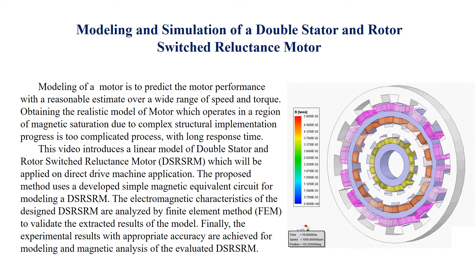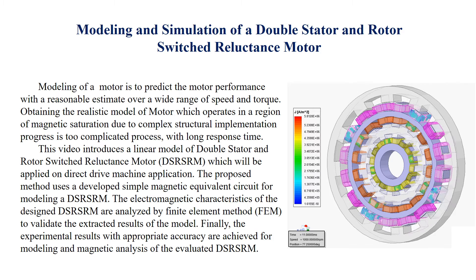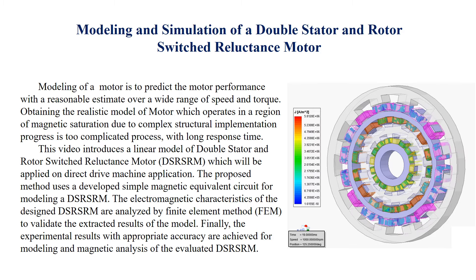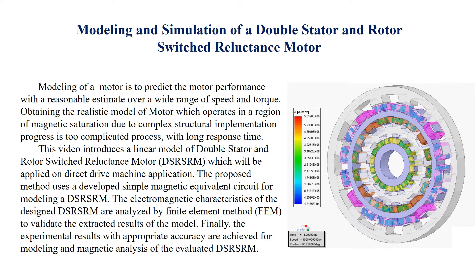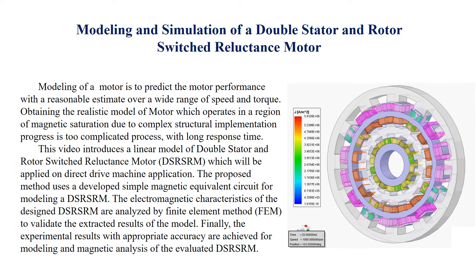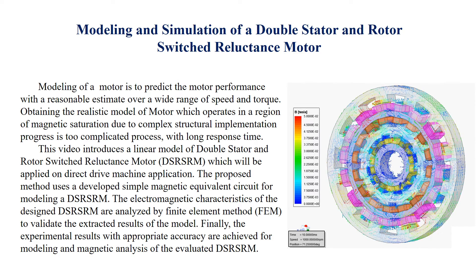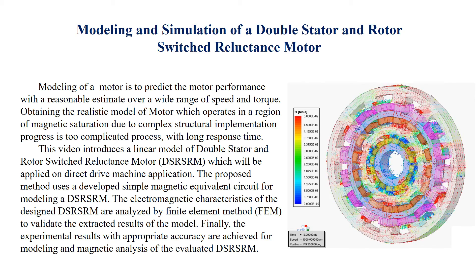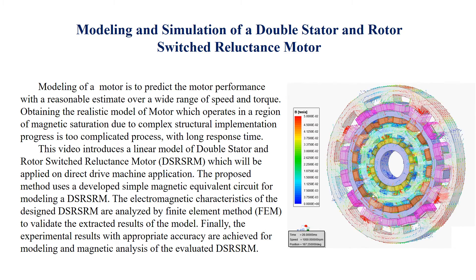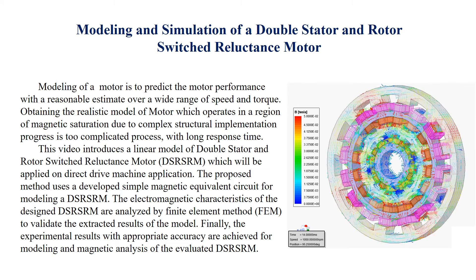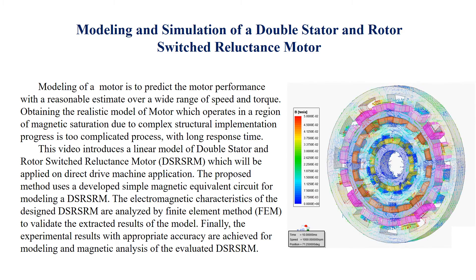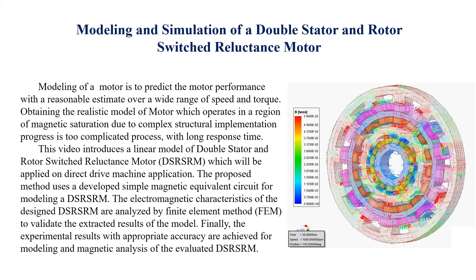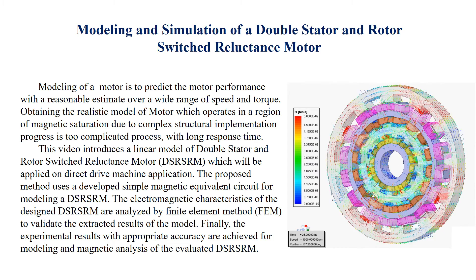Modeling of a motor is to predict the motor performance with a reasonable estimate over a wide range of speed and torque. Obtaining the realistic model of a motor which operates in a region of magnetic saturation due to complex structural implementation is a complicated process with long response time. This video introduces a linear model of double stator and rotor-switched reluctance motor which will be applied on direct drive machine applications.